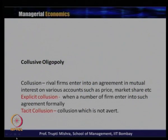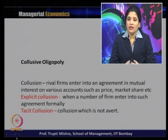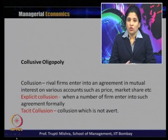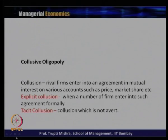Before getting into the model, let us understand what collusion means. Collusion is when rival firms or all firms enter into an agreement in mutual interest on various accounts such as price and market share. Simply put, all the firms come together and jointly decide on the price to follow in the market and what should be the market share. Two kinds of collusion may happen: explicit collusion — where firms enter into such an agreement formally — and tacit collusion, which is informal but still exists. Tacit collusion exists because no legalized form of cartel exists formally.